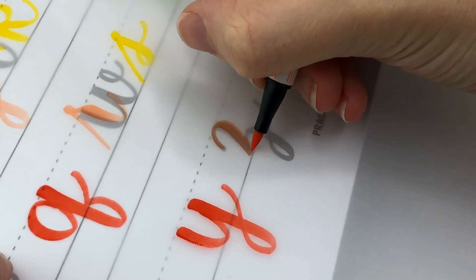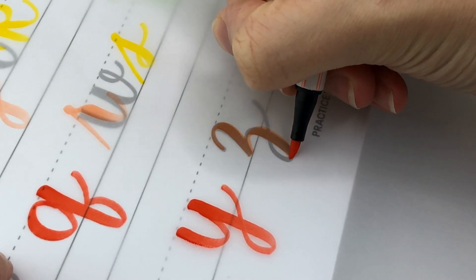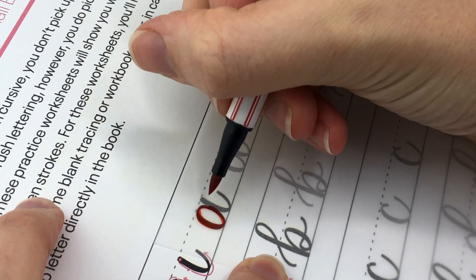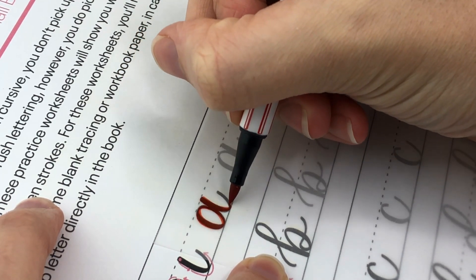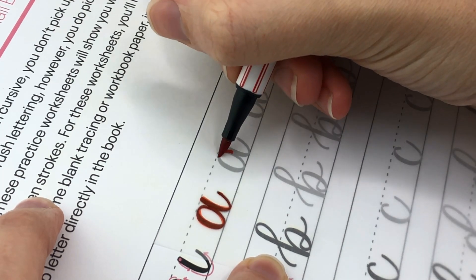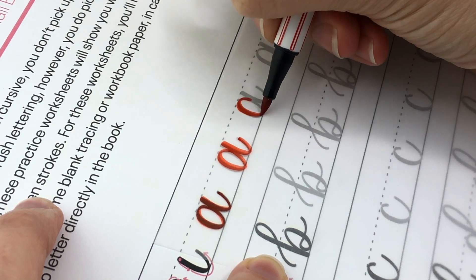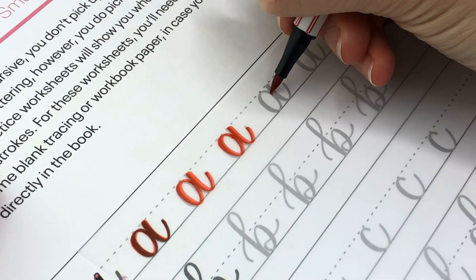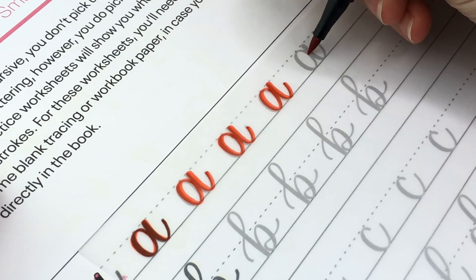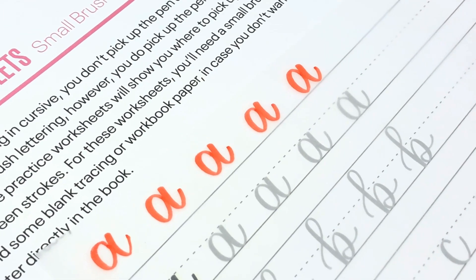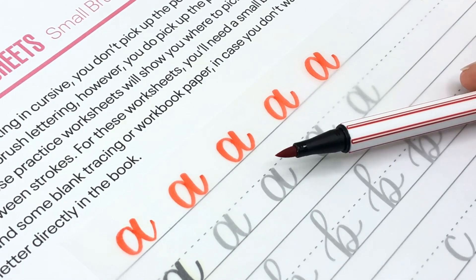Before we get into blending I wanted to see how well these would do on the small practice worksheets and I found that they actually do work. You can easily get pretty small lettering with these brush pens. I will say though they aren't going to get as thin of upstrokes as an actual small brush pen so there isn't as much of a contrast if that's something that's important to you but this just shows that they have a good quality brush tip if it can look good in multiple sizes.